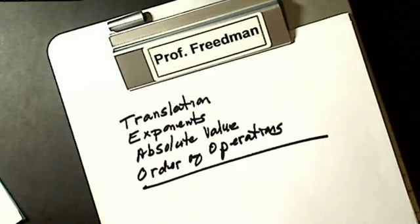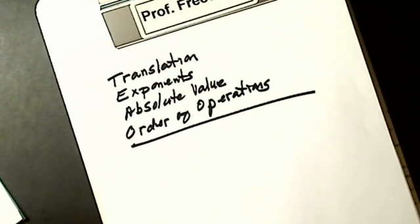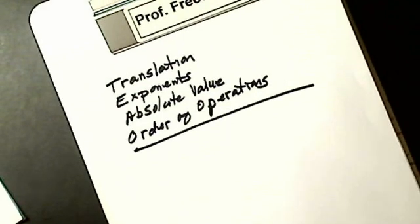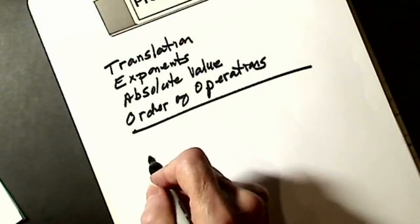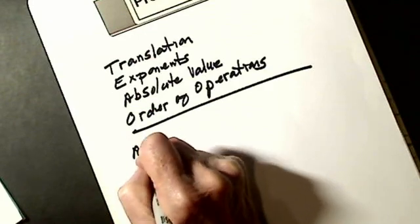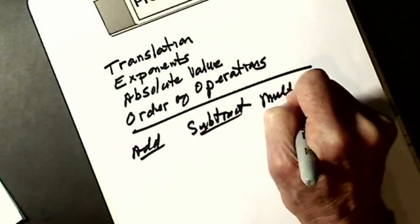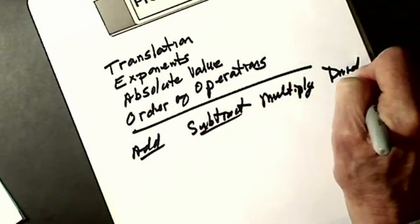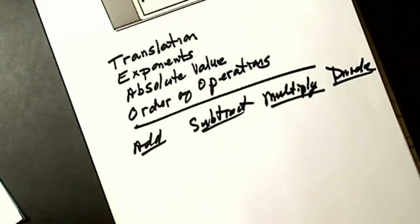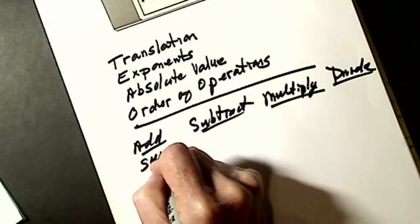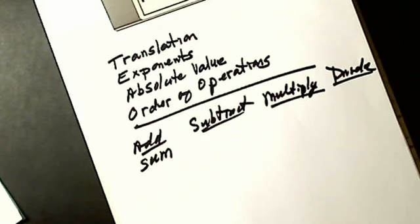To translate from the English language into math, you have to know certain words. You probably know about 95% of these. We have to know the words that mean add, subtract, multiply, and divide. If I was adding a column of numbers and I told you to find the sum — starting with the letter S — if you saw 'sum,' you would know to add.